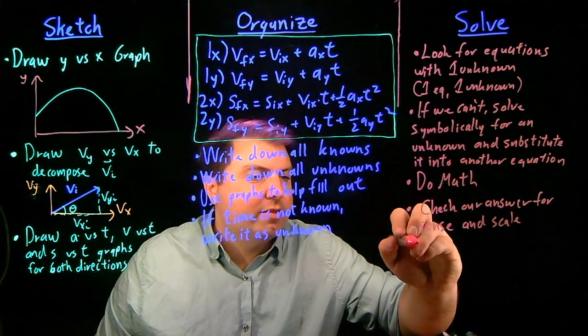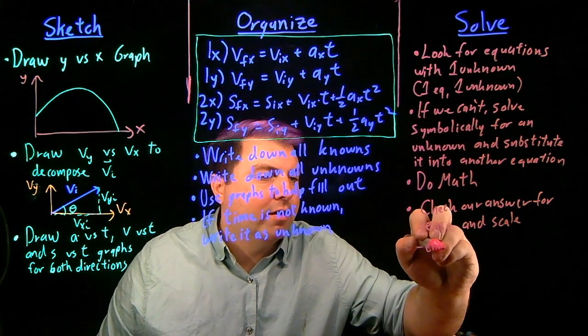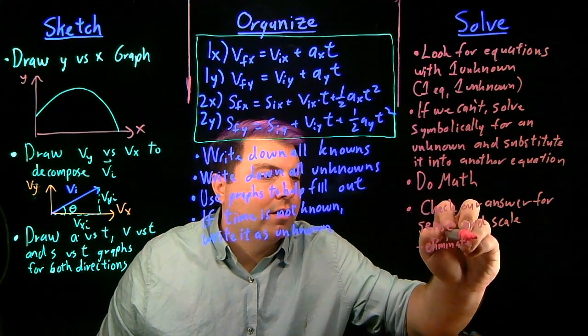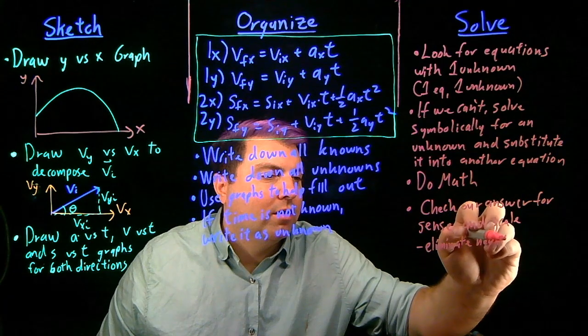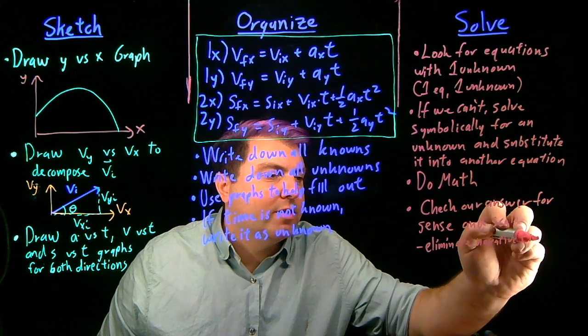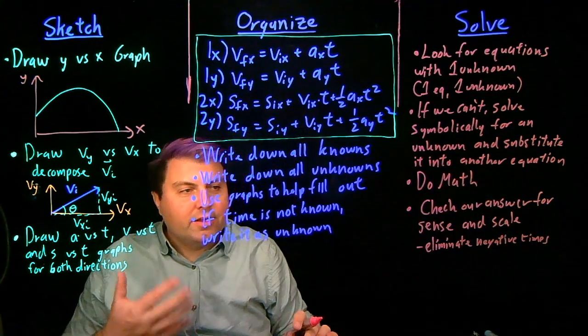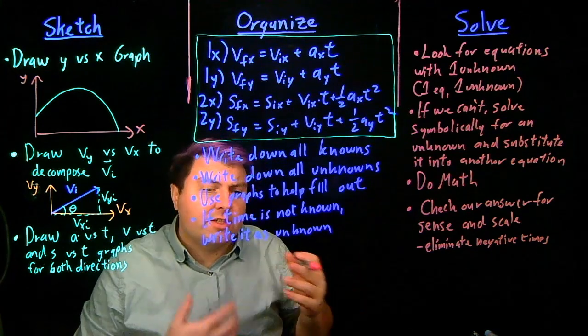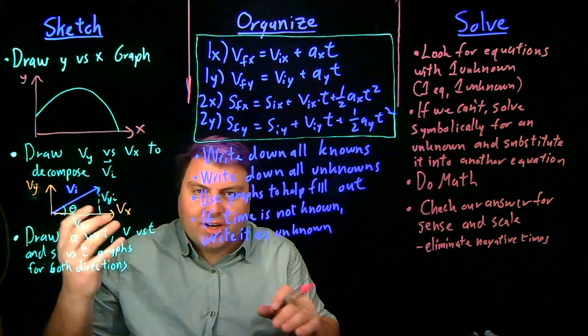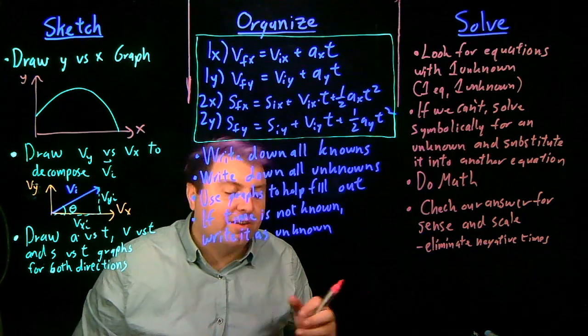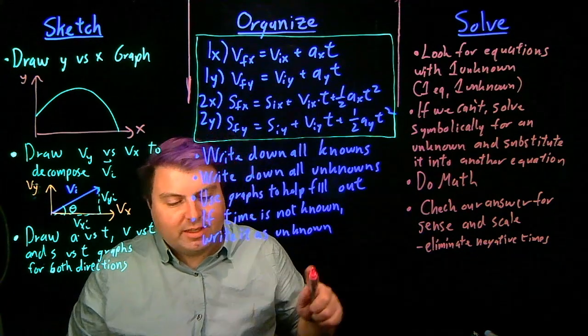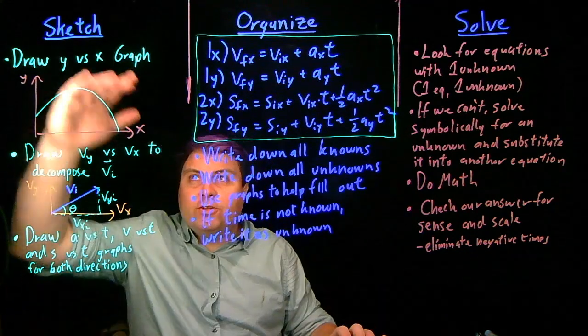So examples of this is like eliminating negative times and other things of that sort, checking if our speed makes sense, checking if our flight makes sense, checking if our acceleration is a reasonable amount and things like that.